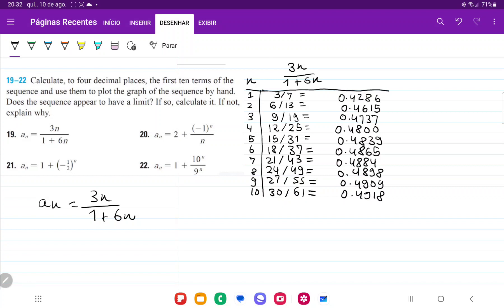Where I did 3 times 10, 30, divided by 1 plus 6 times 10, so 61. And then I put here the four decimal approximation.